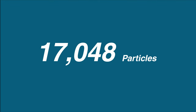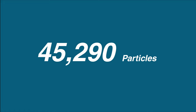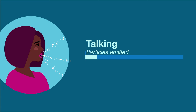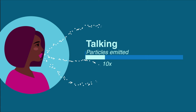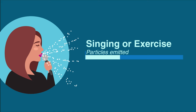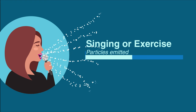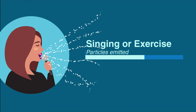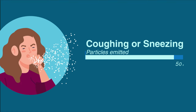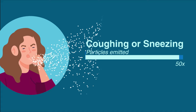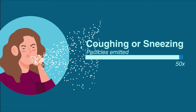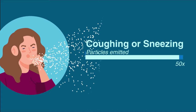The number of particles we exhale, and therefore the likelihood of disease transmission, depends on what we're doing. In general, we exhale about 10 times more particles when we're speaking than when we're simply breathing. The louder someone is speaking or even singing, the more particles they emit. Similarly, the harder someone is breathing — such as from exercise — the more particles they emit. Coughing and sneezing emit huge numbers of particles, about 50 times more than speaking. However, people talk much more often than they cough, and breathe even more, so all of these activities are important sources of airborne germs.